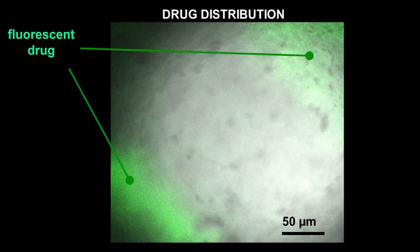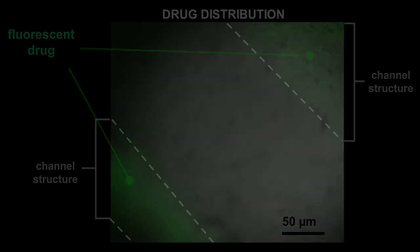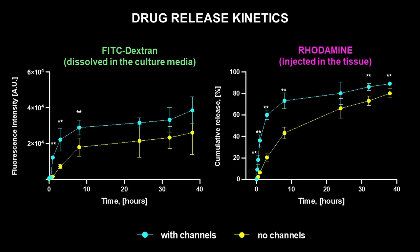Green fluorescent molecules highlighted the structure of the channels. Drugs with various molecular weights distributed differently through the tissue and the vessel-mimicking network and showed different release kinetics that were highly affected by the presence or absence of the perfusable network.